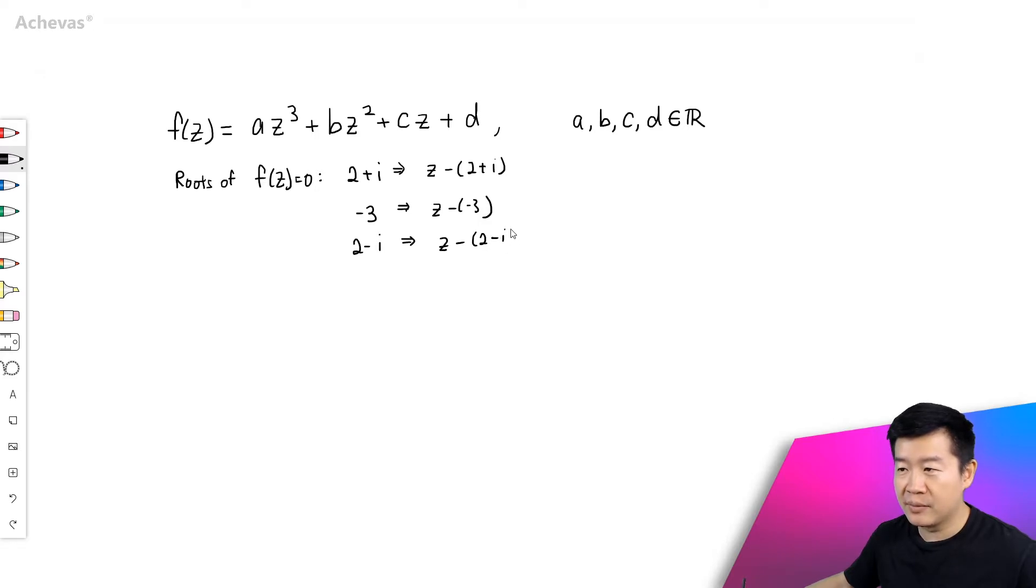This is going to be a factor, which means that for f(z), I can also re-express it in terms of its factors. That will be z minus (2 plus i), and we also have z minus (2 minus i), the conjugate of the first root. And of course, which is going to be z minus minus 3, is going to be z plus 3. So we have this.